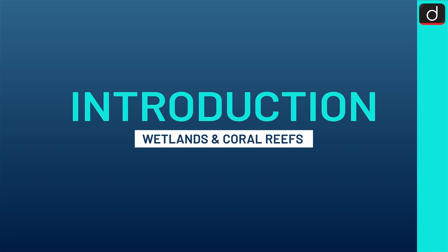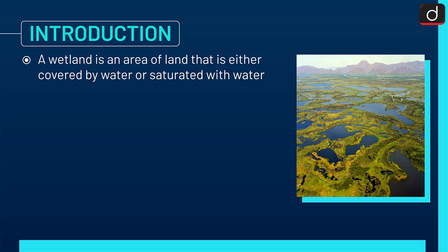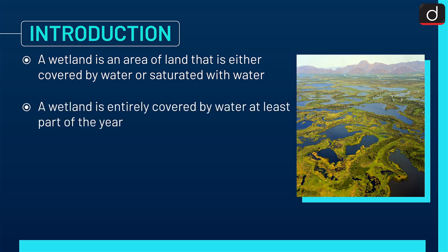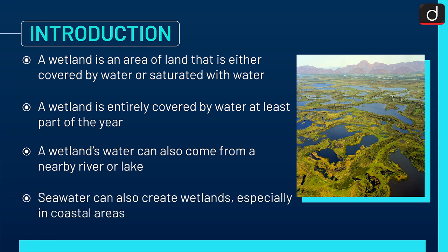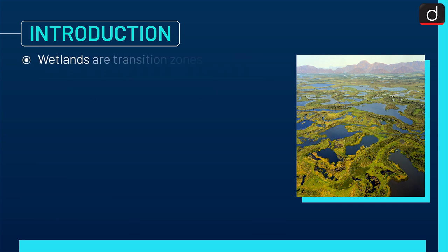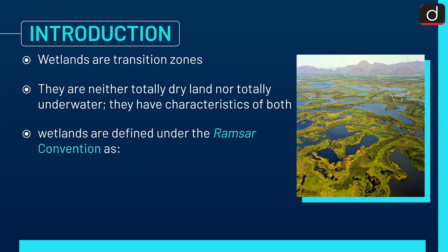With a brief introduction first — a wetland is an area of land that is either covered by water or saturated with water. A wetland is covered by water at least part of the year. A wetland's water can also come from a nearby river, lake, or seawater, especially in coastal areas. Wetlands are transition zones — neither totally dry land nor totally underwater; they have characteristics of both.